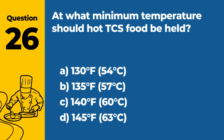Question 48: Describe the process of dry storage and its importance in food safety. A. Storing food in a moist environment to prevent drying out. B. Keeping food in a cool, dry, and well-ventilated area to prevent spoilage. C. Storing food at room temperature regardless of packaging. D. Using dehydrators to store all types of food. Answer: B. Keeping food in a cool, dry, and well-ventilated area to prevent spoilage. Dry storage involves storing food in a cool, dry, and well-ventilated area, which is crucial for preventing spoilage and contamination, especially for non-perishable items.